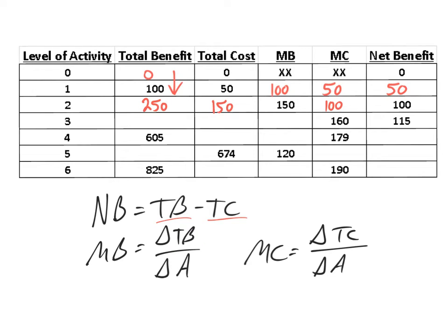For the next row, we know net benefit is 115 and marginal cost is 160. If marginal cost is 160, total cost must go from 150 to 310, because that difference gives us a marginal cost of 160. Furthermore, we know net benefit is 115 and total cost is 310, so total benefit must be 425 — because 425 minus 310 equals 115. And looking at the difference between 250 and 425, that gives us a marginal benefit of 175.